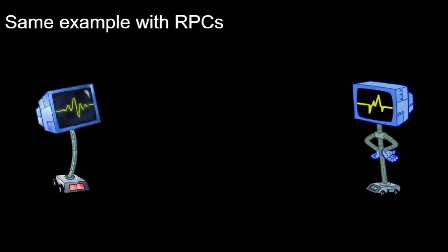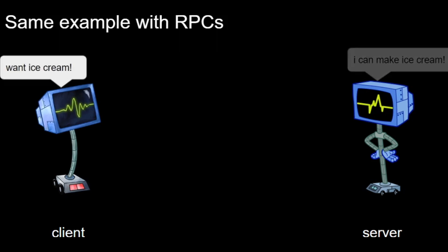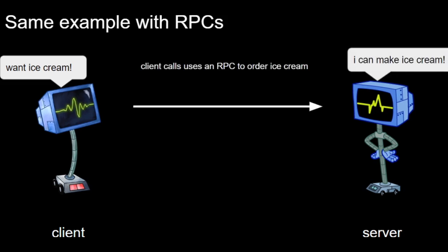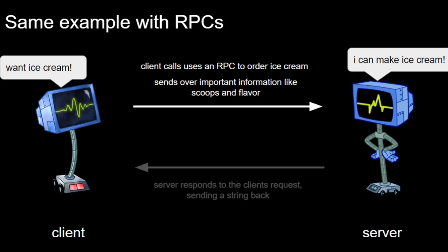Now let's imagine the same example of ordering ice cream, but in terms of RPCs. Say we have two computers that are separate from each other — we'll name them the client and the server. The client wants ice cream, but it's unable to make it on its own, so it has to go look somewhere else. The server, however, can make ice cream. The client needs to send an RPC to the server to order this ice cream. It'll send over important information like scoops and flavor, and the server, after receiving this request, will respond with the string back to the client using RPCs.